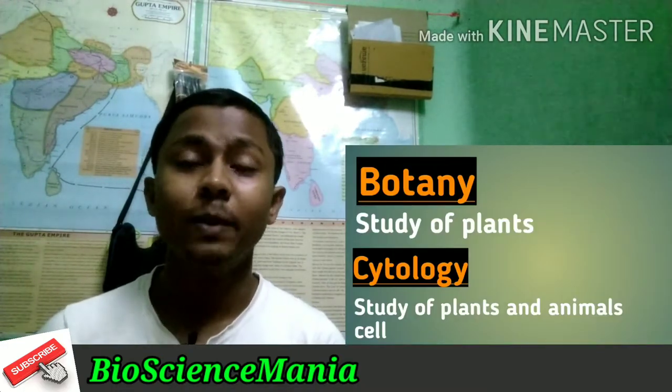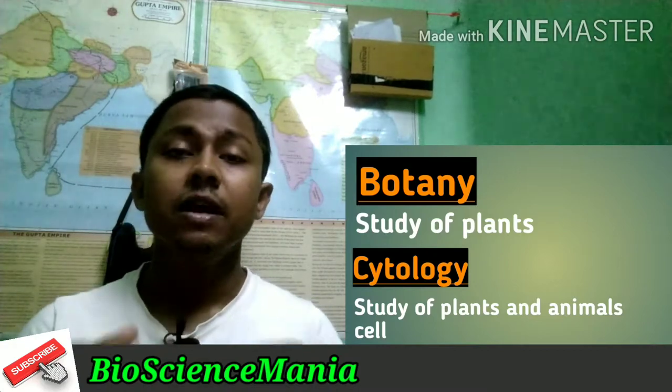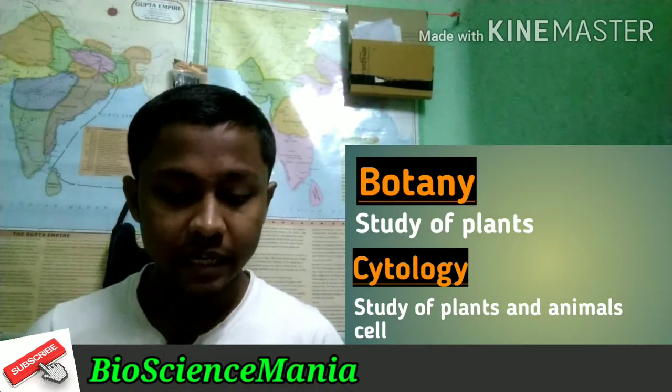First we talk about zoology — the study of animals. When we study about animals, this branch is known as zoology. Next, botany is the study of plants. Next, cytology means the study of plant and animal cells. When a branch of biology discusses or experiments on plant and animal cells, we call this cytology.